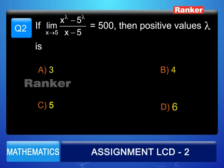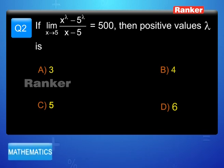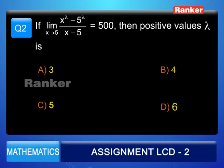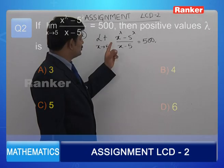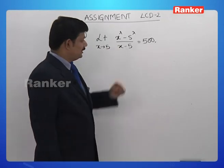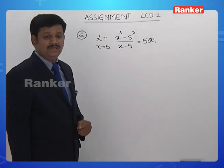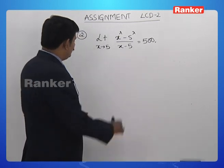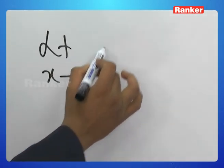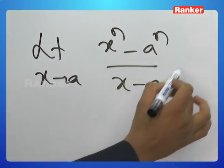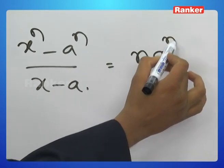Next question: if the limit extending to 5 of x^λ minus 5^λ divided by x minus 5 is given to be 500, then we are asked for the positive values of λ. This question is in the standard format of limit extending to a of x^n minus a^n divided by x minus a, and we know the answer is n·a^(n-1).